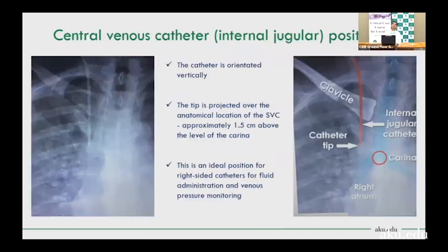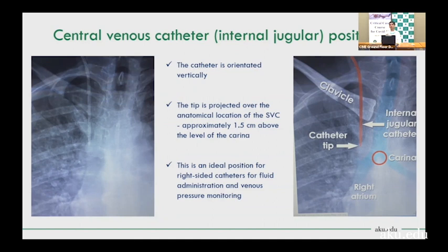Central venous catheters are very important. The tip should be at the junction of the superior vena cava and right atrium — ideally 1.5 cm above the carina level. This is the ideal position for right-sided catheters for fluid administration and venous pressure monitoring.